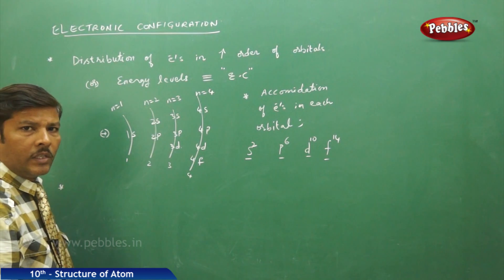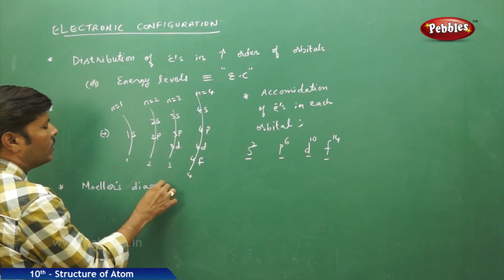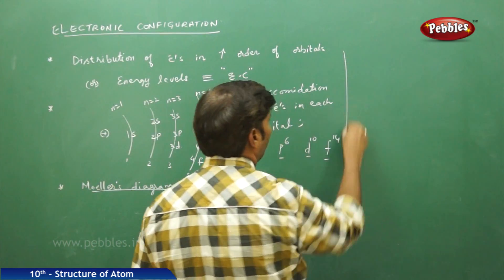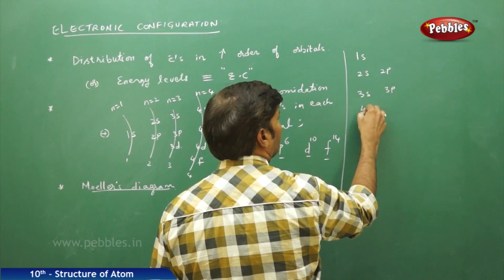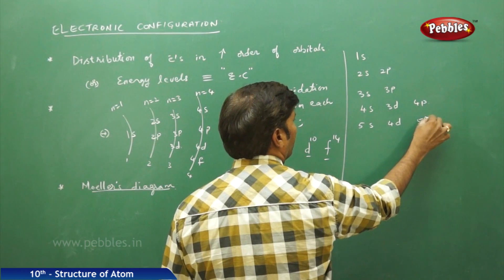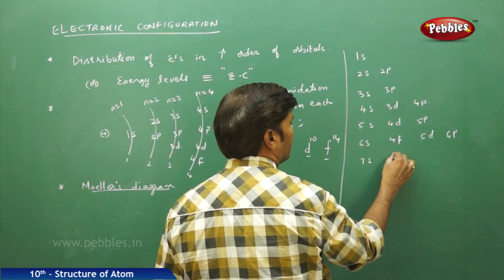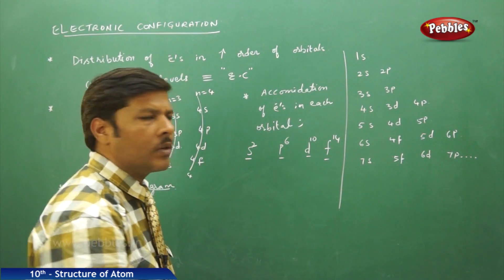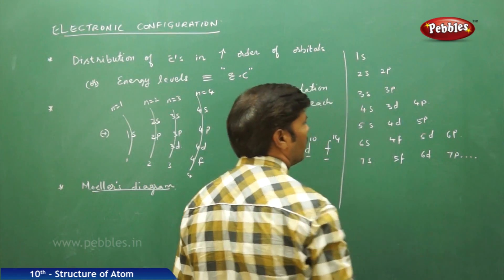The distribution of electrons into various orbitals also depends on an important diagram called Moller's diagram. In this diagram, the order is: 1s, 2s, 2p, 3s, 3p, 4s, 3d, 4p, 5s, 4d, 5p, 6s, 4f, 5d, 6p, 7s, 5f, 6d, 7p, and so on. When distributing electrons for multi-electron species, we should follow this order.